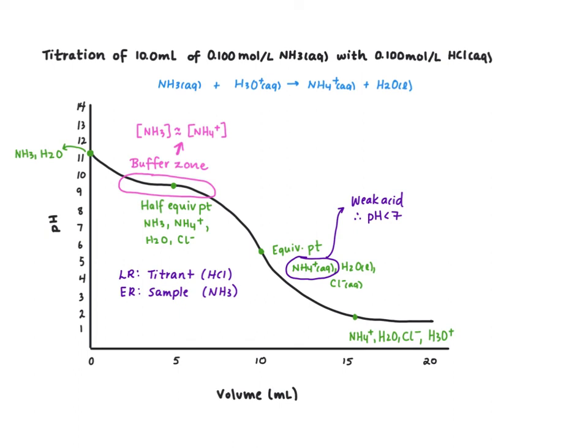Whenever you're looking at a titration curve, there are two ways to tell that it's a weak base. One is you're going to see this initial dip in pH followed by a leveling out, and two, you'll see that the equivalence point has a pH below 7.